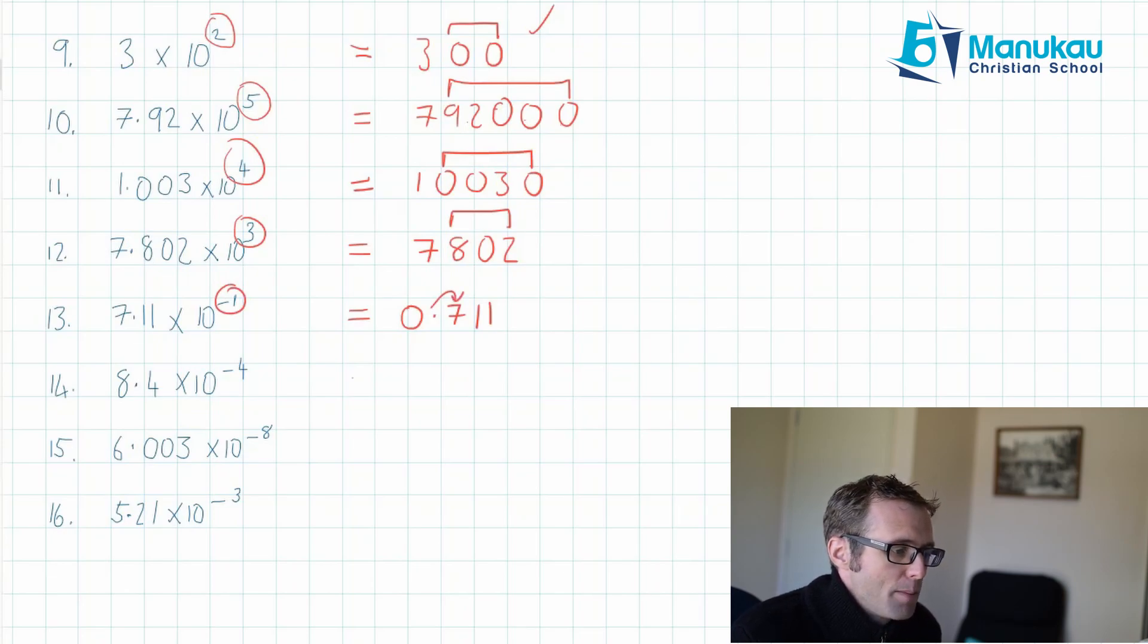Okay, next one. 8.4 times 10 to the negative 4. So this should be 0.00084. Let's check: 1, 2, 3, 4. Yes, we're correct. Next one. 6.003 times 10 to the power of negative 8. So it's going to be 0.00000006, and then we've got to add in these numbers after the decimal point: 003. And that's that one sorted.